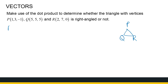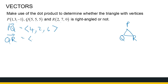Let's look at the vectors. Vector PQ — from P to Q — is (5 minus 1, 5 minus 3, 5 minus minus 1), giving (4, 2, 6). Vector QR — from Q to R — is (2 minus 5, 7 minus 5, 0 minus 5), giving (minus 3, 2, minus 5). Vector PR — from P to R — is (2 minus 1, 7 minus 3, 0 minus minus 1), giving (1, 4, 1).